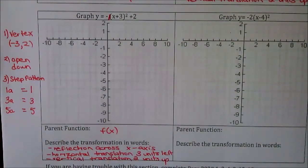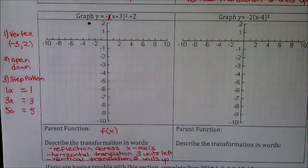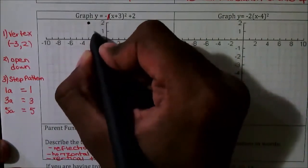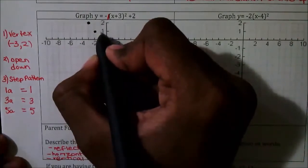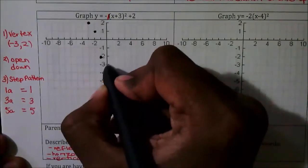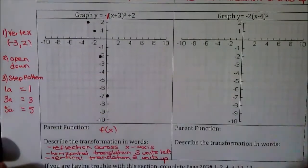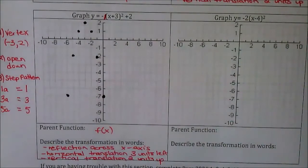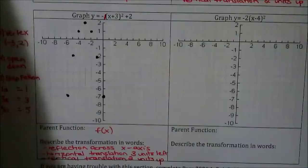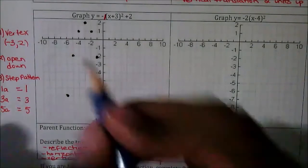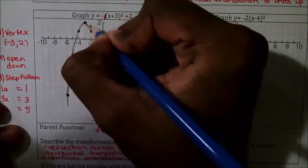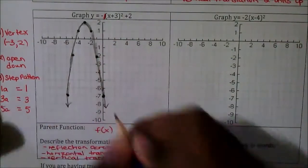Starting with vertex (−3, 2), it opens down so all points are in that vicinity. Following the step pattern: go right one and down one. Then right one and down three. Then over one and down five. It's a mirror image, so plot the mirrored points going down. Connect your parabola — and don't forget the arrows at the end.